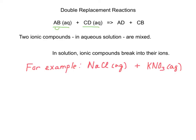So you can see A and B together and C and D together. And when you're done, A and D and B and C are together. So what they do is they switch partners. That's the general idea of a double replacement reaction.